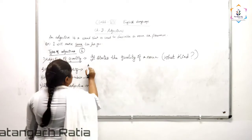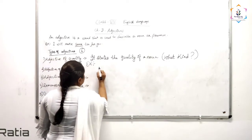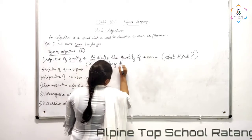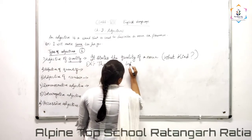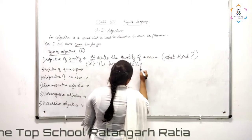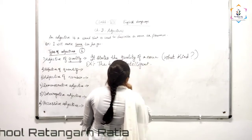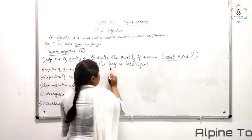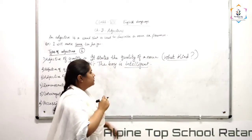For example, the boy is intelligent. You ask yourself, what kind of boy? Intelligent. So this is your adjective of quality.